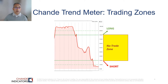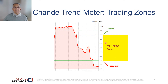This is what a typical trace of the Trend Meter might look like. The scale is from 0 to 100. We've drawn a region between 80 and 20 with solid lines — that's our no-trade zone. Very strong uptrends will produce values above 90, and very strong downtrends will produce values below 10.